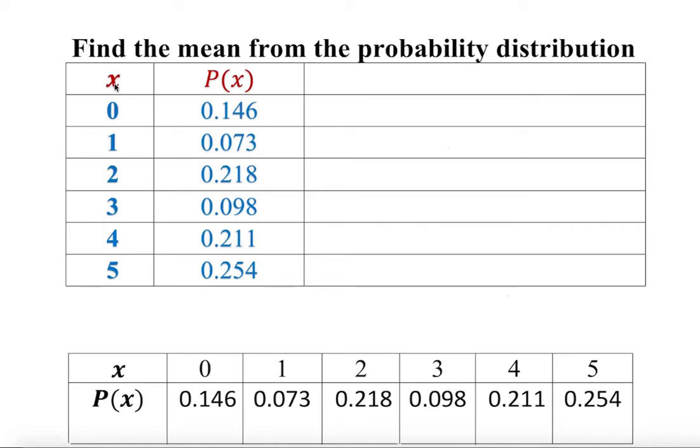For example, x is a discrete random variable. The formula to find the mean is mean equals sum of x times probability of x. What does it mean? It means you multiply all of these values.